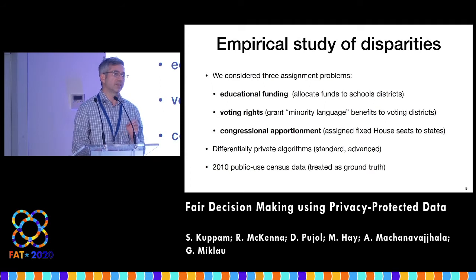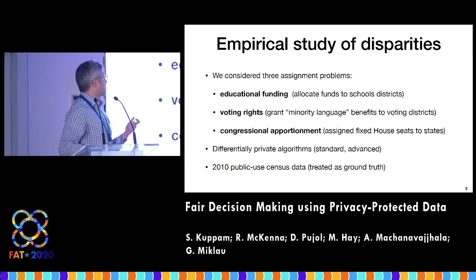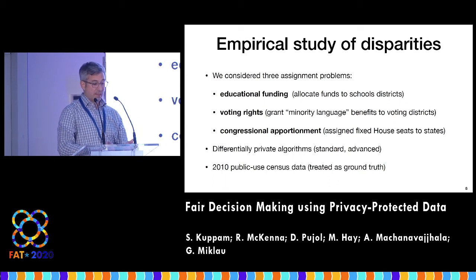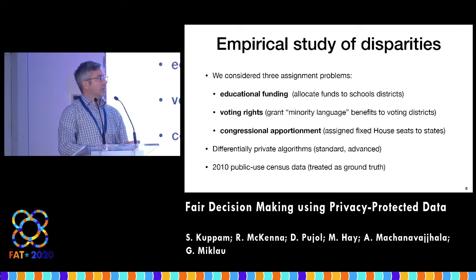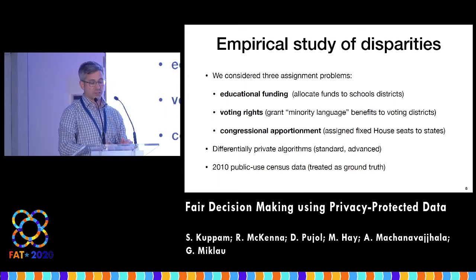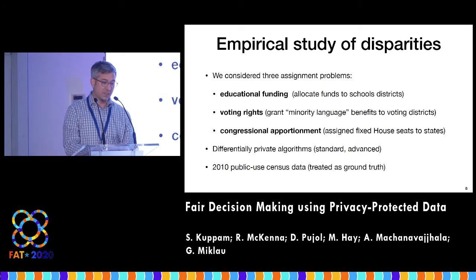In the paper, we empirically studied three of these assignment problems: educational funding (Title I funds in the US), voting rights benefits, and congressional apportionment. We tried a couple of different private algorithms — both standard commonplace algorithms and more advanced algorithms from the literature — and we ran the simulation on 2010 public use data, which is treated as ground truth.